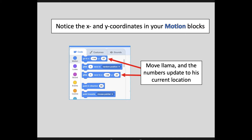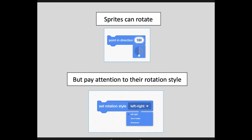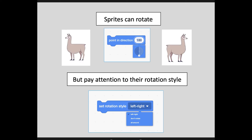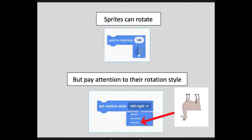The easiest thing really is to place the sprite, then pull out the code — this will make more sense here in a second. Also know that sprites can rotate. The point and direction command will let him spin around, but we have to pay attention to their rotation style. If you want Llama to face left or right without flipping over onto his head, choose the left-right rotation style. The next option, Don't Rotate, means just that — Llama won't turn at all, no matter what code is placed on him. The last option, All Around, will let him rotate a full 360 degrees.